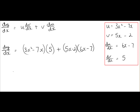Next we complete our multiplication. 3x squared by 5 gives us 15x squared, minus 7x by 5 gives us minus 35x. On this side we have 5x by 6x gives us 30x squared. 5x by minus 7 gives us minus 35x. Minus 2 by 6x gives us minus 12x, and minus 2 by minus 7 gives us plus 14.